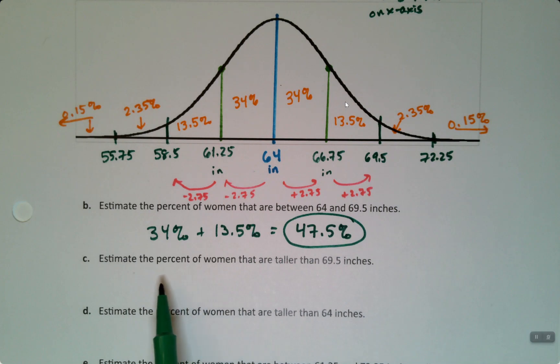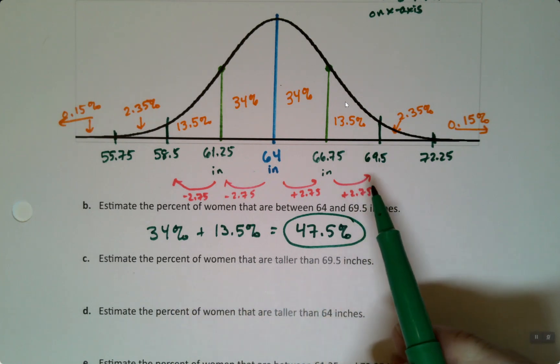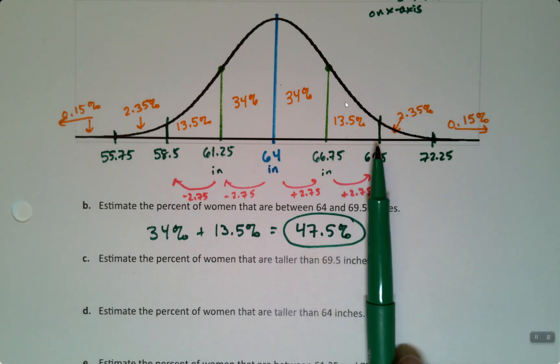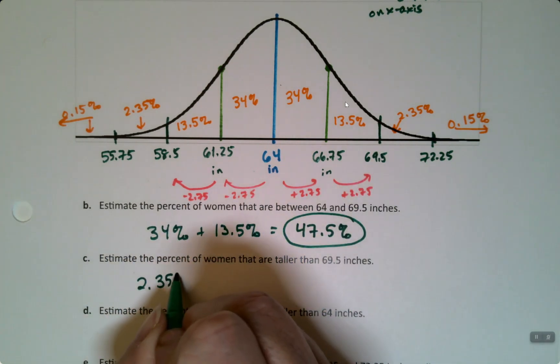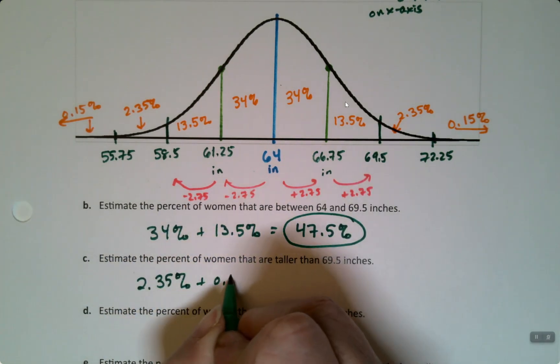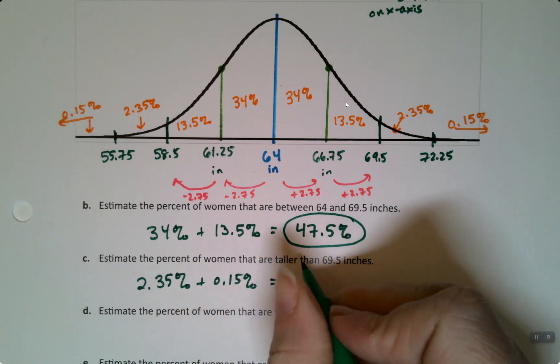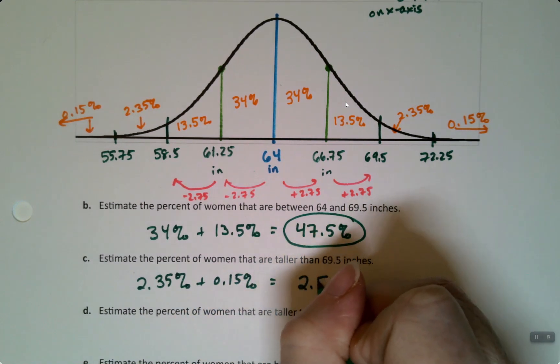Next, estimate the percent of women that are taller than 69.5. Well, 69.5 is right here. So taller than 69.5 would be all the women that are over here, which is these two percentages added up. So it's 2.35% plus 0.15%, which makes 2.5%.